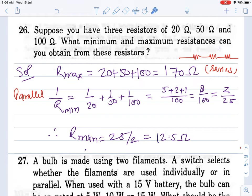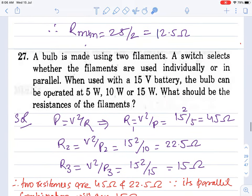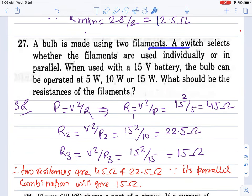Question 27: A bulb is made using two filaments. A switch selects whether the filaments are used individually or in parallel. When used with a 15V battery, the bulb can be operated at 5W, 10W, or 15W. What should be the resistance of the filaments? Suppose these are two filaments.